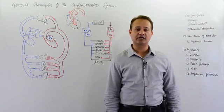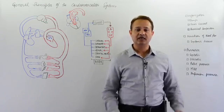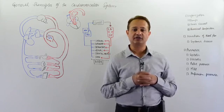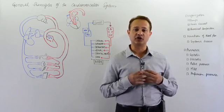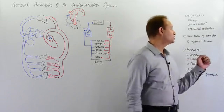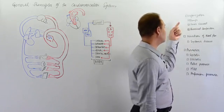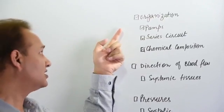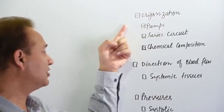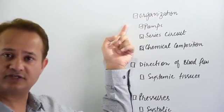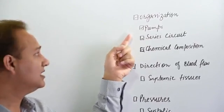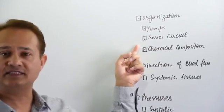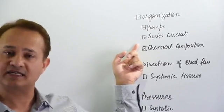This is Mobin and we are talking about the cardiovascular system. This is the first lecture in cardiovascular system physiology — the general principles. The topics we'll cover today are the organization of the cardiovascular system, the heart as two separate pumps, and series and parallel circuits in the CVS.